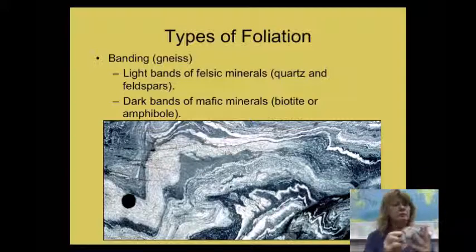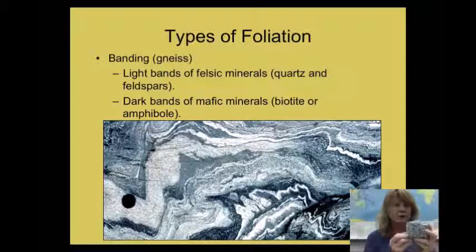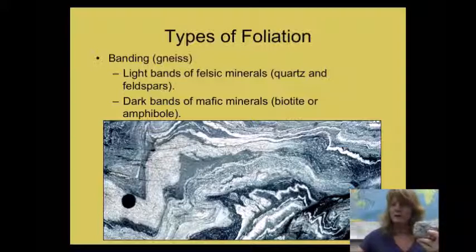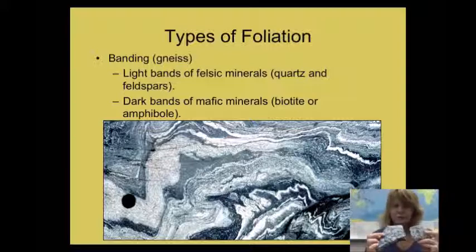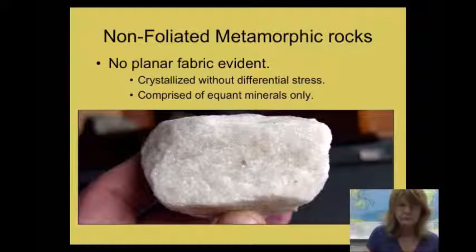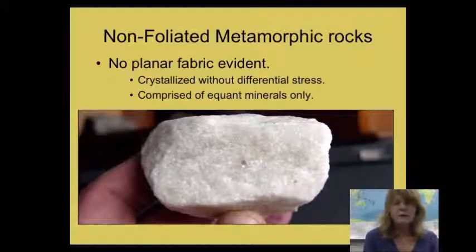A granitic igneous rock, for example, has white and dark minerals with a random orientation. If that rock is subjected to tremendous directed stress, the result might be a gneiss — similar-looking minerals but in an organized banded pattern. Granites are not the only rock type that can become a gneiss, but it's a clear example. That covers the main types of foliation and the rocks that result from each.